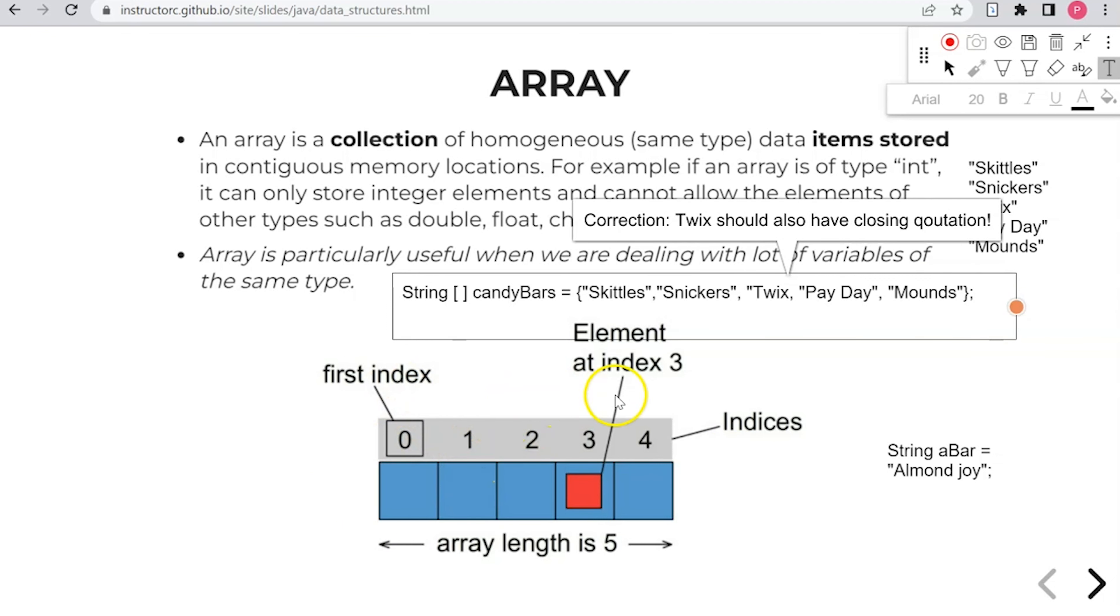So down below is this image. And there's some terminology here. We have first index. And arrays always start at position zero. So arrays start with position zero. So typically we always start with one in everyday life. But arrays start at index or position zero.